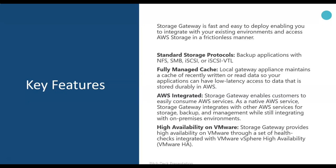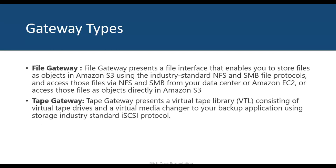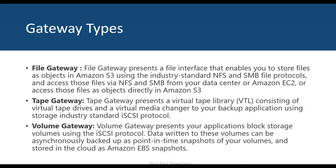It can also be integrated with VMware High Availability if you have a VMware infrastructure. The three types of gateways are: number one, File Gateway for file sharing services using NFS and SMB protocols; number two, Tape Gateway for virtual tape library using the iSCSI protocol; and number three, Volume Gateway for block storage presentation using iSCSI, for example to backup data as snapshots.